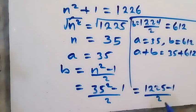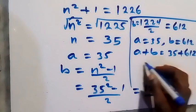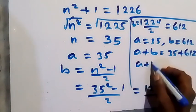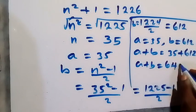Then we are finding a plus b, and that will be 35 plus 612. When we add this together, this gives us 647. That means a plus b is equal to 647.